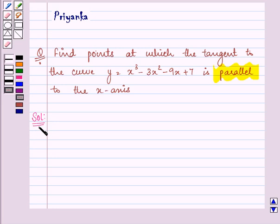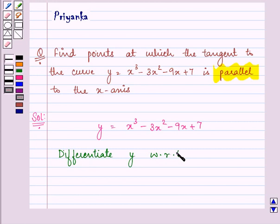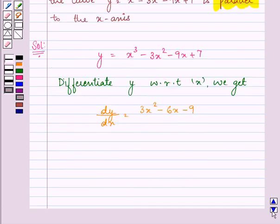Now here in this question we are given the equation of the curve as x cubed minus 3x squared minus 9x plus 7. First of all let us differentiate y with respect to x and on doing so we get dy by dx is equal to 3x squared minus 6x minus 9.